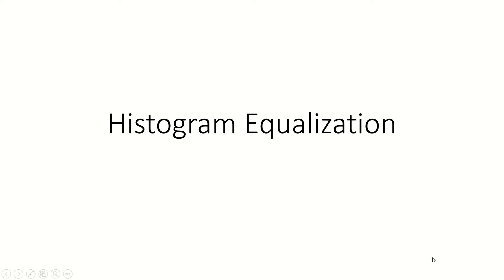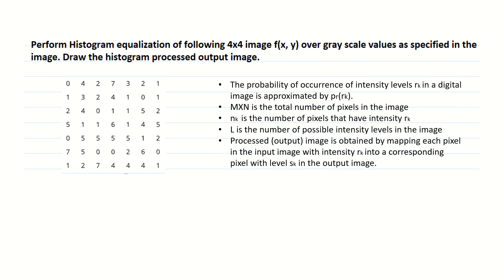Hello students, today we are going to study a problem on histogram equalization. The theoretical concepts were covered in class, so this video is only for problem solving on histogram equalization. Moving to the problem statement: perform histogram equalization of the following four cross four image, given grayscale values as specified, and find the histogram processed output image. Before solving, let us focus on these five key points.